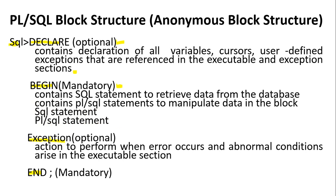The third section is EXCEPTION, which is optional. It handles errors and abnormal conditions that arise in the executable section. Whenever an error occurs in the DECLARE or BEGIN section, it is displayed here in the EXCEPTION section so you can find and correct the error. The END keyword followed by a semicolon is used to end the program, and this is mandatory.